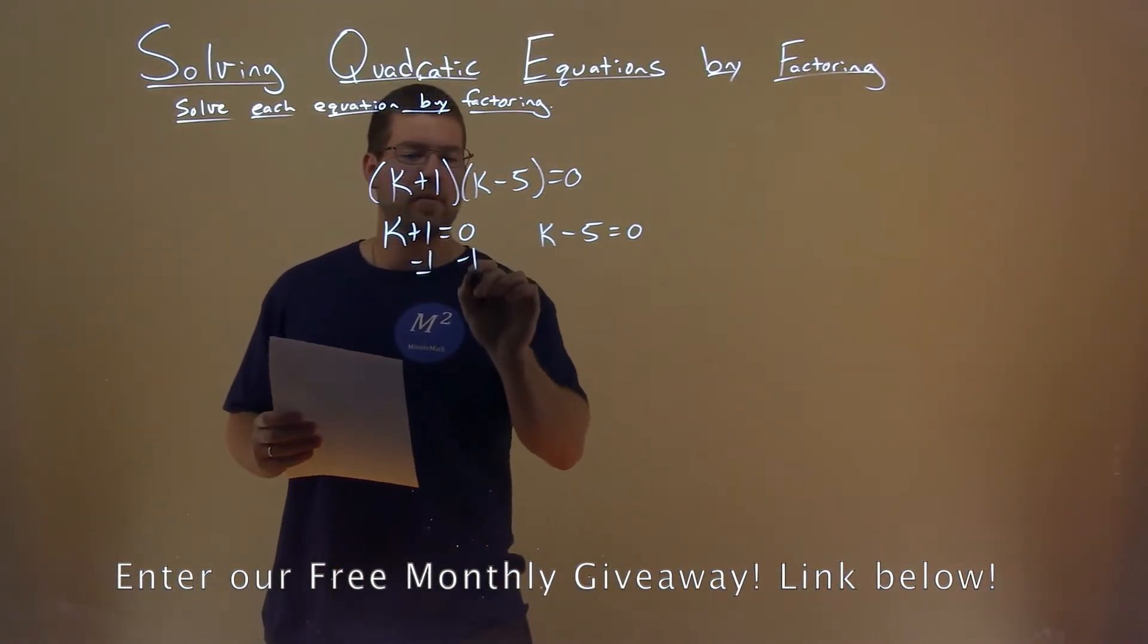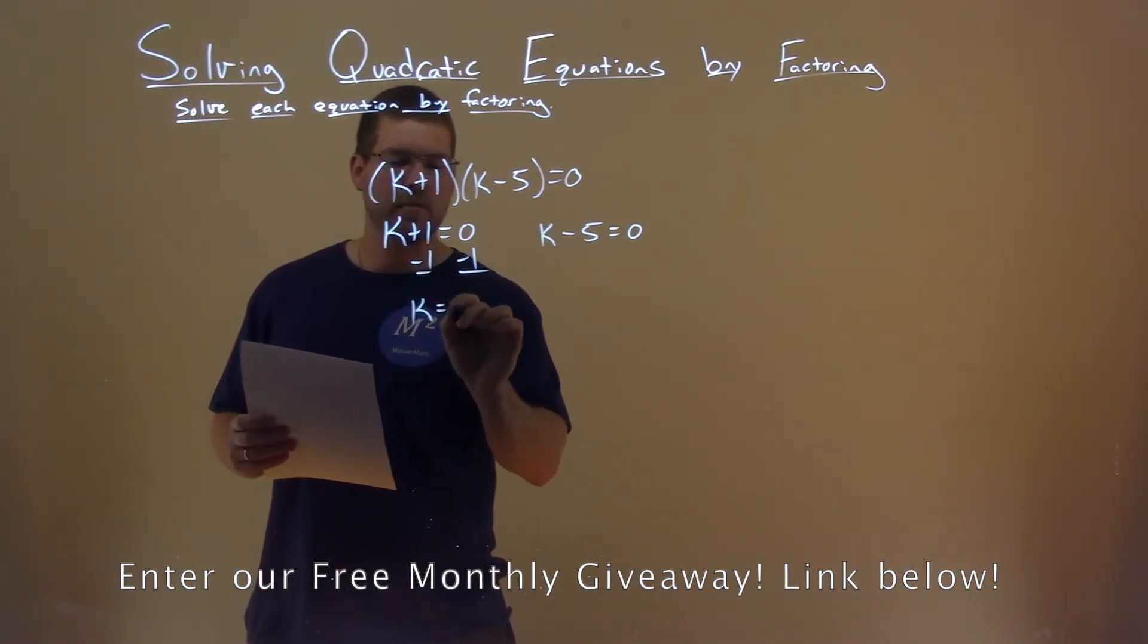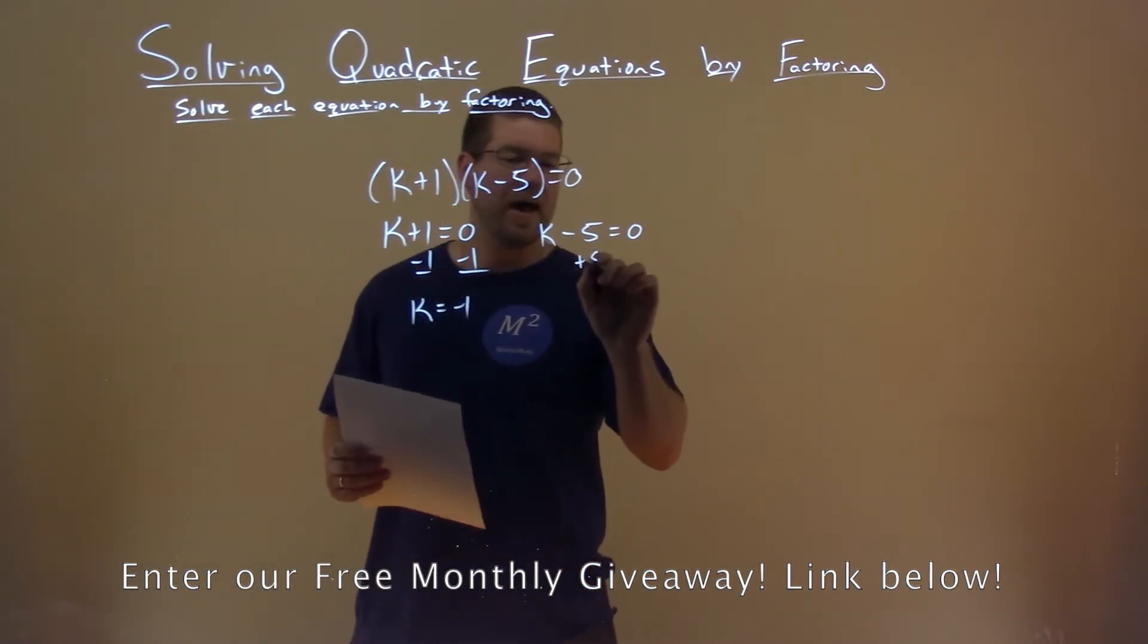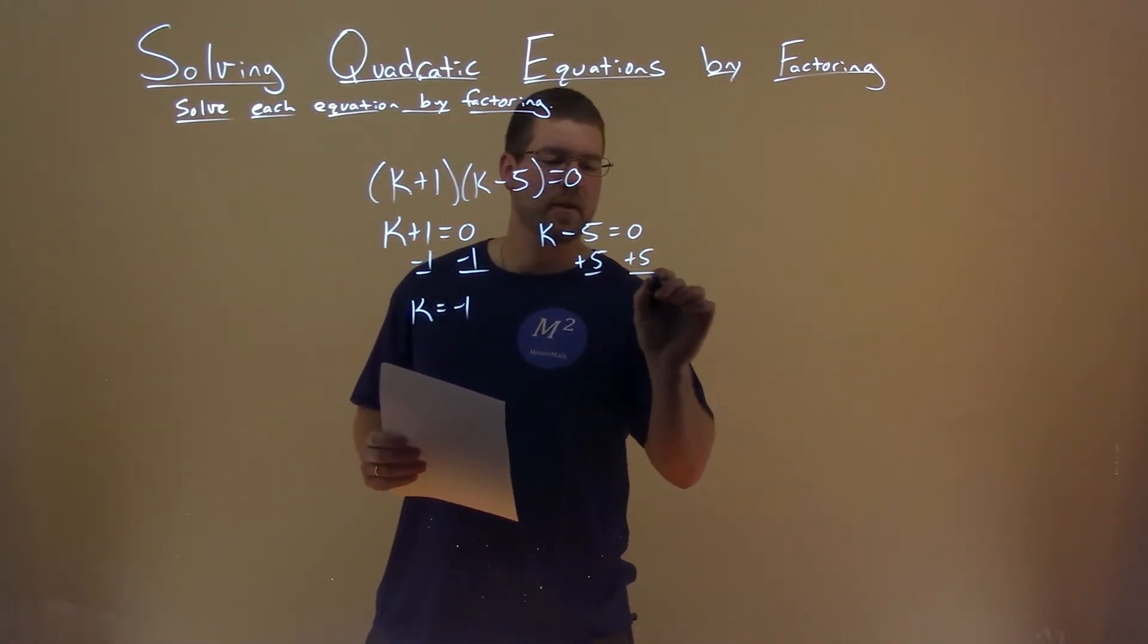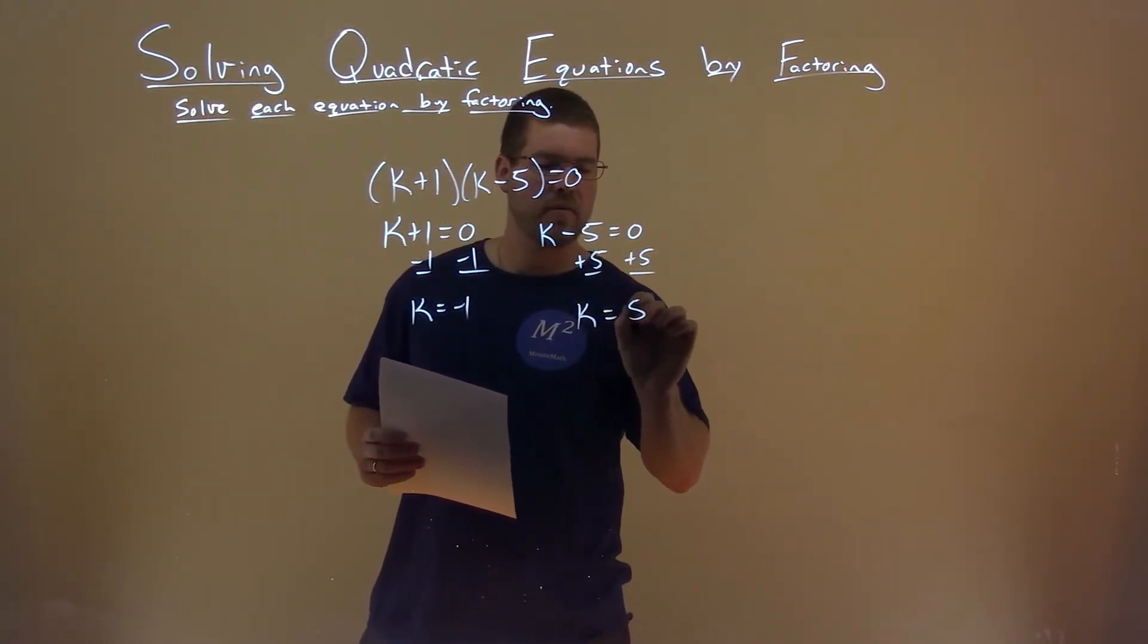We subtract 1 from both sides, and we have k = -1. Add 5 to both sides, and k = 5.